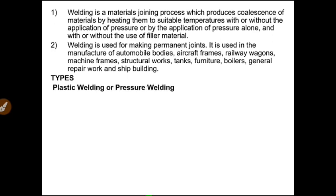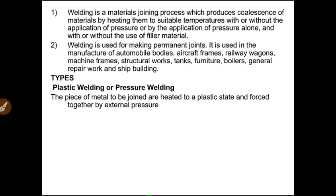There are basically two types of welding. One is plastic welding or pressure welding. In pressure welding, materials are heated to a plastic state — not fully molten — and then pressure is applied to join them. This is the resistance type of welding. Heat is applied to the plastic state and pressure is applied from the sides.